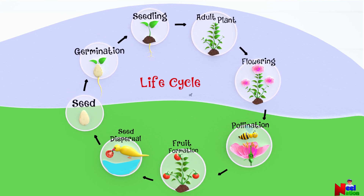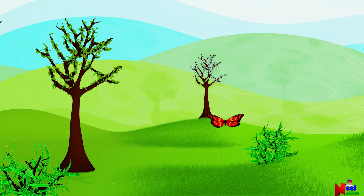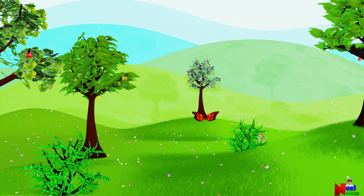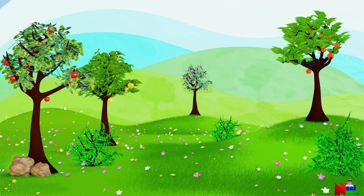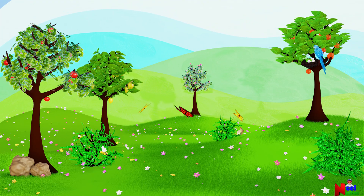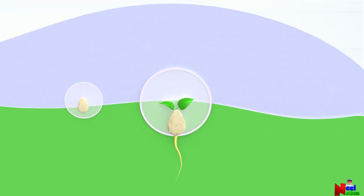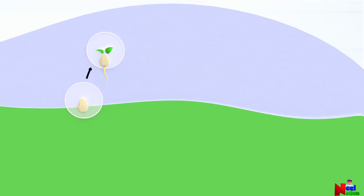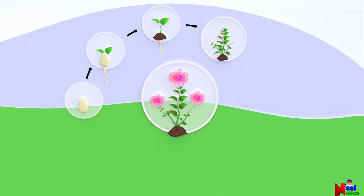Hello kids, let's learn about the life cycle of plants! Just like you and me, plants are also living things. They also grow, make more baby plants, and go through an amazing life cycle. The life cycle of a plant is the different stages of a plant's life — just like us, plants have a journey to go through.